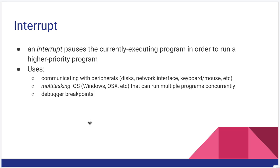An interrupt is a formalization of this. It pauses the currently executing program in order to run a higher priority program. We actually see this a lot with operating systems — it's integral to the concept of multitasking, where you can run multiple programs concurrently. In the simplest case where you only have one processor, multitasking pauses one program to execute another, then that's paused to execute another, and we just go around pausing one program and loading another onto the CPU. In modern times, when we have multiple CPUs and multiple cores, we can run a few more things concurrently, but we typically have more programs than we do cores.